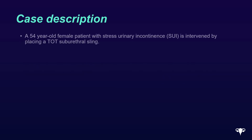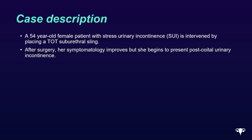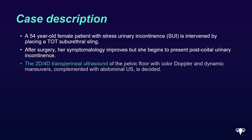We present the case of a 54-year-old female patient with stress urinary incontinence. She is intervened by placing a TOT suburethral sling. After surgery, her symptomatology improves, but she begins to present post-coital urinary incontinence. A 2D 4D Transperineal Ultrasound of the pelvic floor with color Doppler and dynamic maneuvers, complemented with abdominal ultrasound, is decided.